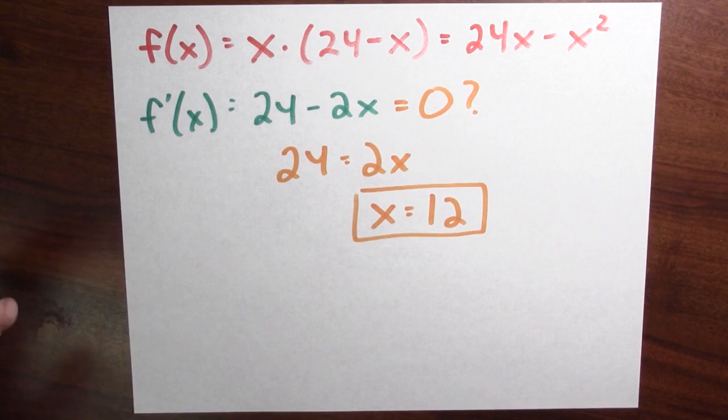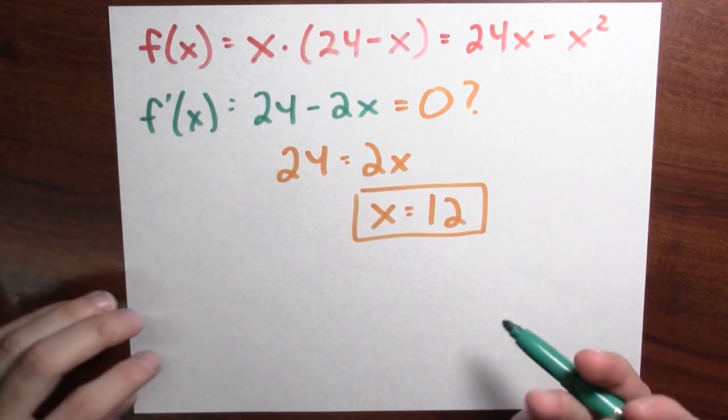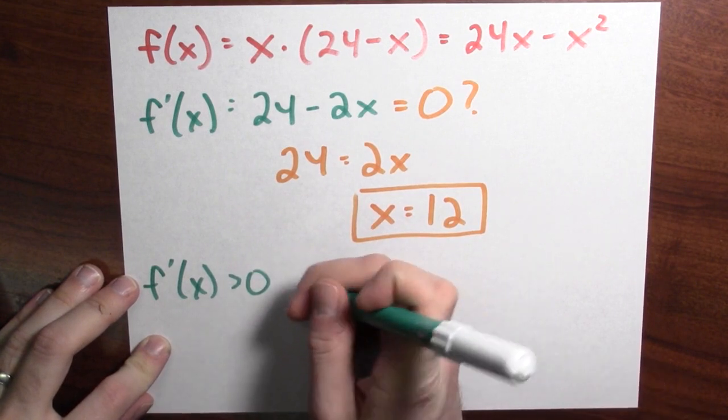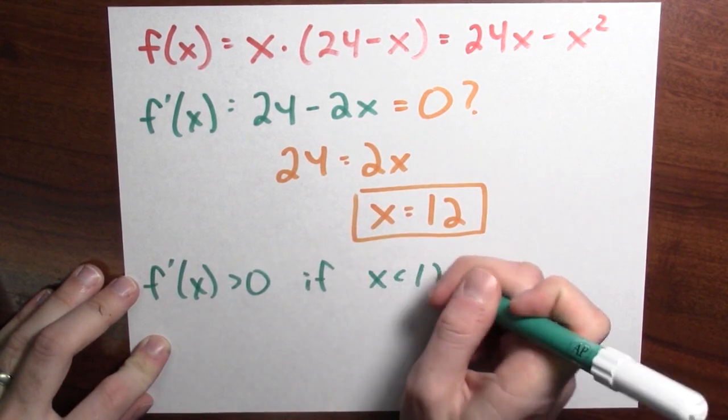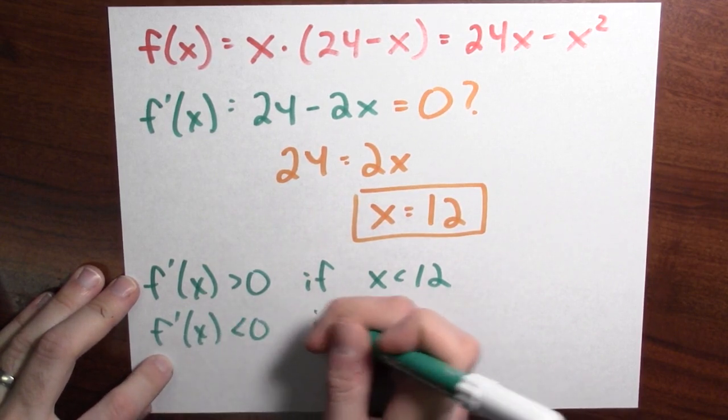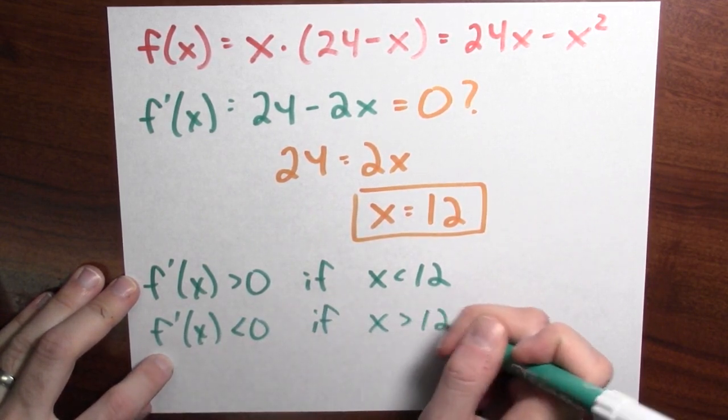What sort of point is that? Well, let's think about the sign, the sign of the first derivative. The derivative is positive if x is less than 12. And the derivative is negative if x is bigger than 12.